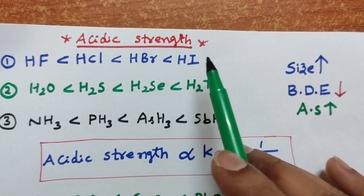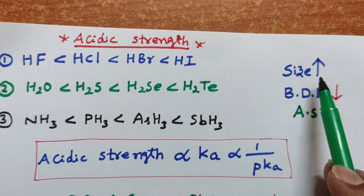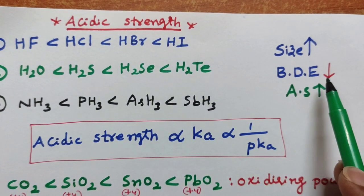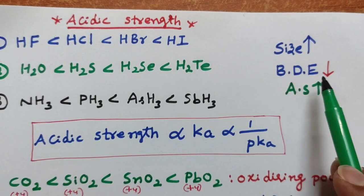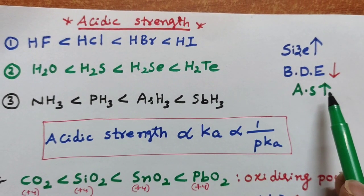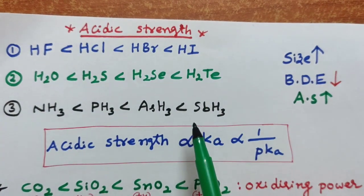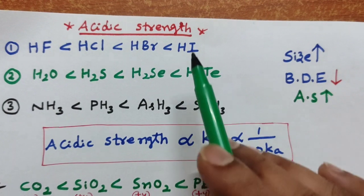In a group, top to bottom, size increases. When size increases, bond dissociation enthalpy decreases. When bond dissociation enthalpy decreases, acidic strength increases. That's why top to bottom, hydrides' acidic strength increases. Very important trend, these three.